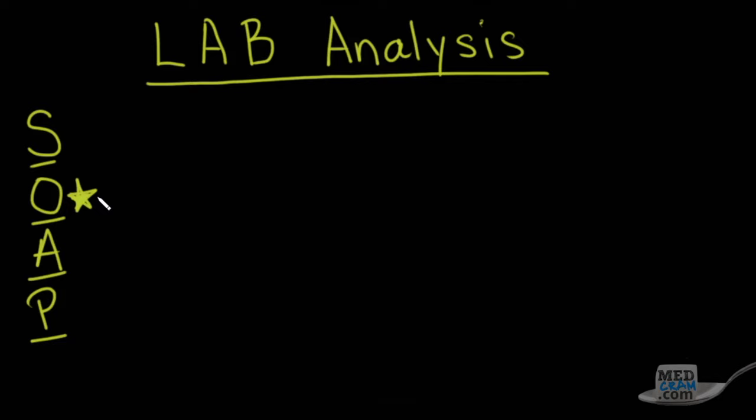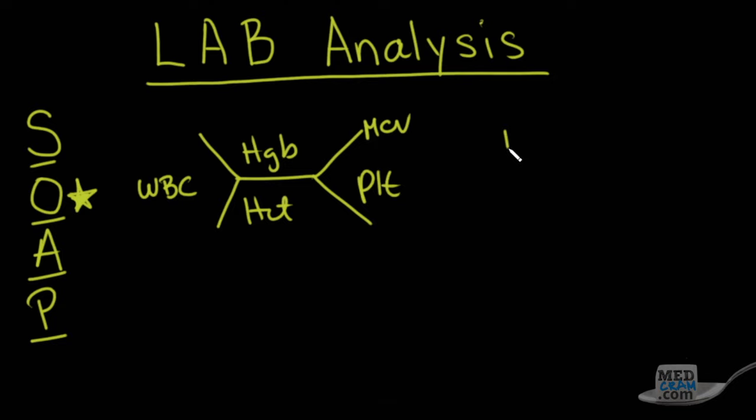This is going to hone your skills in understanding and applying and actually doing something and writing orders about labs that come back. So we're going to go through this in a methodical way, and we're going to talk about the CBC, which you might have seen, where we have a WBC, a hemoglobin, a hematocrit, and a platelet count with an MCV.